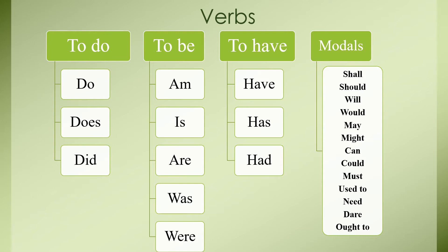There are three types of auxiliary verbs. The first family is 'to do', then 'to be', and then 'to have'. In the 'to do' family, we have three forms: 'do', 'does', and 'did'. Do and does are the present forms — yeh teen hain, us mein se do aur does yeh present form hai — and 'did' is the past form.